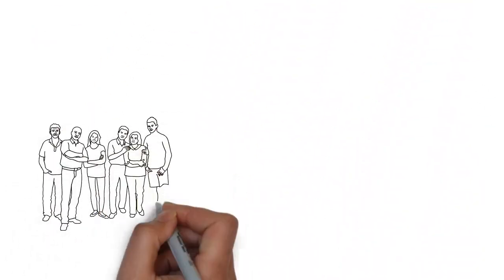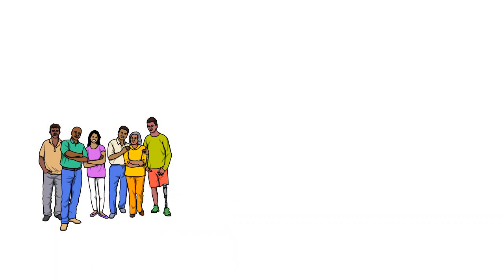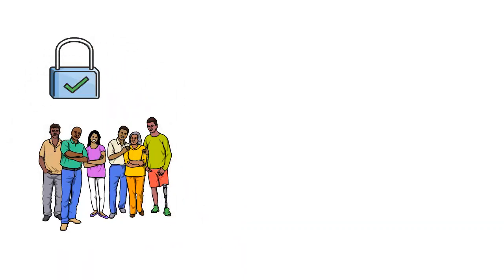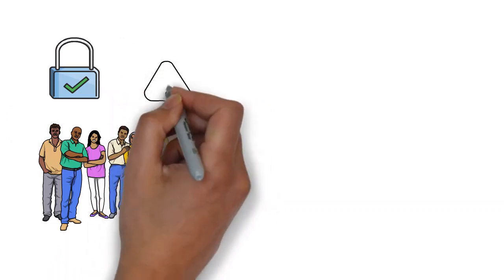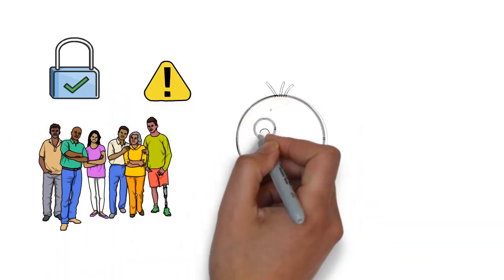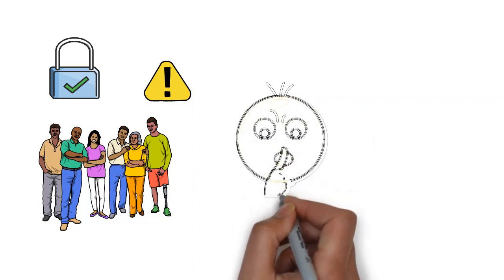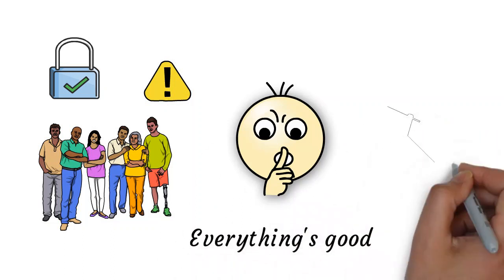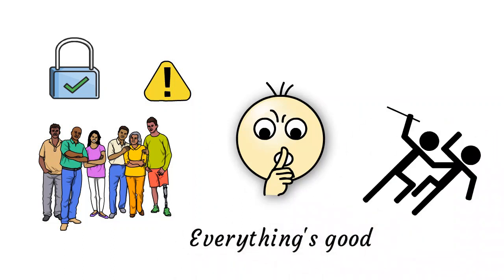All families have rules, right? Some rules are helpful and help keep us safe, but some families have rules that aren't very safe. Some families have rules such as it's not safe to talk about these things with other people, or we have to sweep all of this under the rug. Nothing to see here, everything's good.